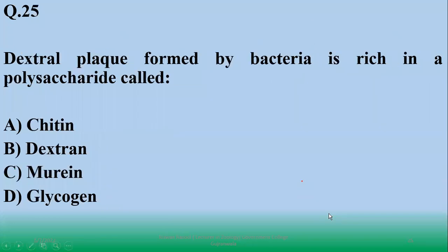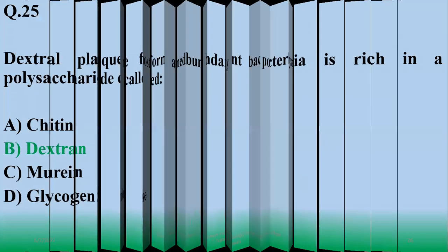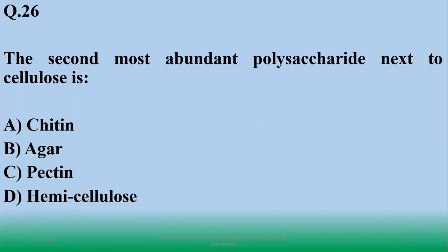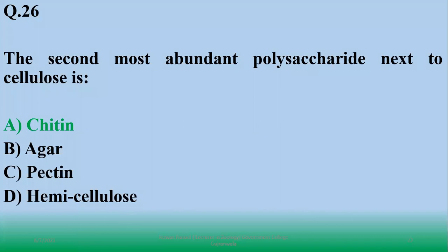Number 25: dental plaque formed by the bacteria has which polysaccharide called - which is actually dental plaque. Dental plaque formed by the bacteria has polysaccharide basically dextran. So right option is B. The second most abundant polysaccharide next to cellulose is chitin, which is found abundantly in fungal cell wall as well as in the exoskeleton of insects.